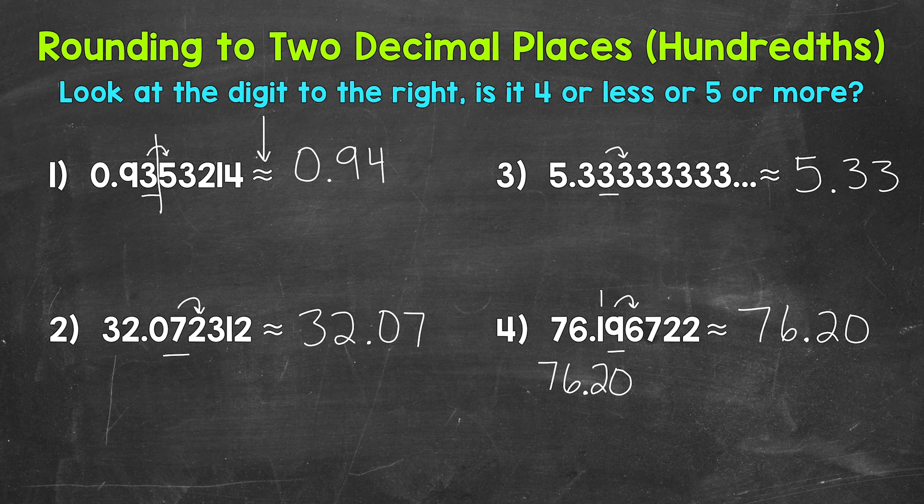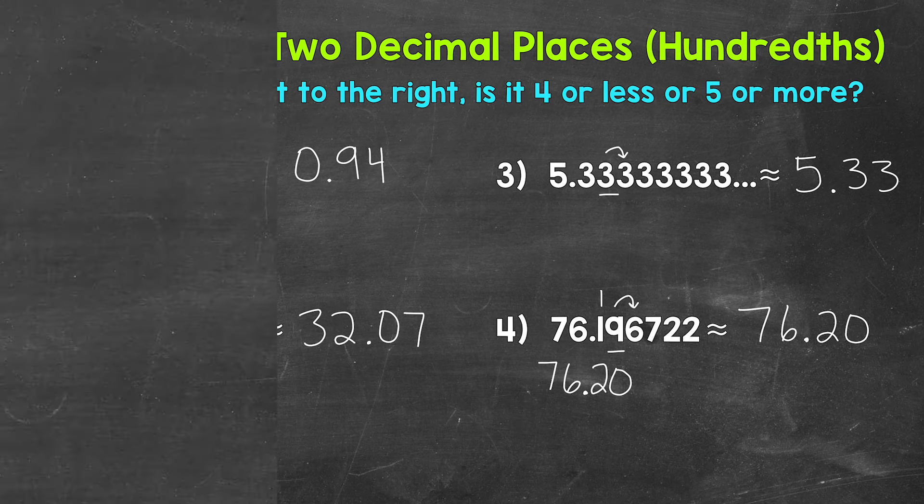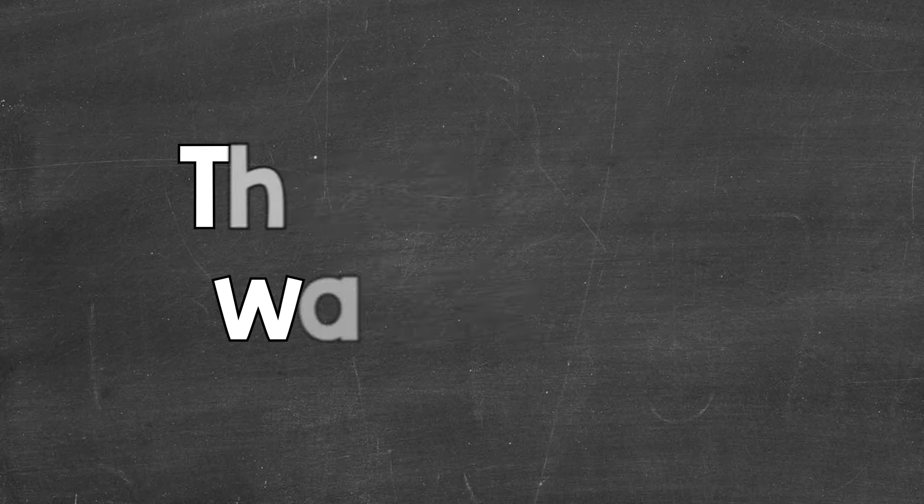I do want to mention that there are different ways to think through rounding up a nine. I dropped the link to my video about rounding up nines down in the description if you need more examples. So there you have it. There's how you round to two decimal places, the hundredths place. I hope that helped. Thanks so much for watching. Until next time, peace.